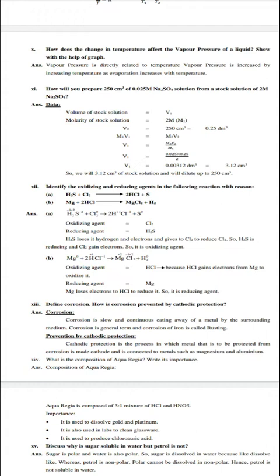Question 12: Identify the oxidizing and reducing agents in the following reactions with reason. First reaction is H2S plus Cl2 gives 2HCl plus S. So oxidizing agent is chlorine and reducing agent is hydrogen sulfide, H2S. H2S loses hydrogen and electrons and gives to Cl2 and reduces Cl2, so H2S is reducing agent and chlorine gains electrons so it is oxidizing agent. Similarly, the reaction is Mg plus 2HCl gives MgCl2 plus H2.